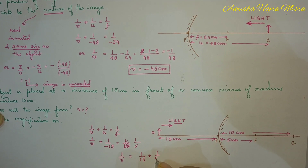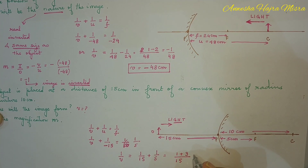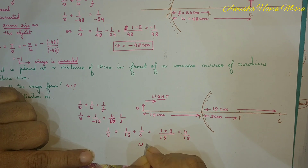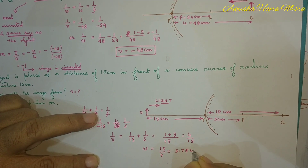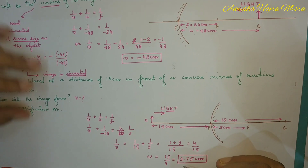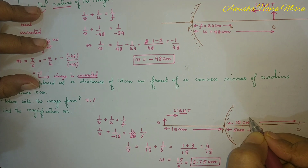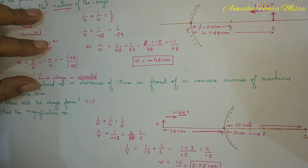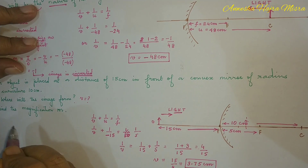Solving: 1/V = 1/F − 1/U = 1/5 − (−1/15). Wait, 1/V = 1/15 + 1/5. LCM is 15, so this becomes (1 + 3)/15 = 4/15, giving V = 15/4 = 3.75 centimeters. Since V is positive, the image forms in the direction of light — behind the mirror — at 3.75 cm from the pole.